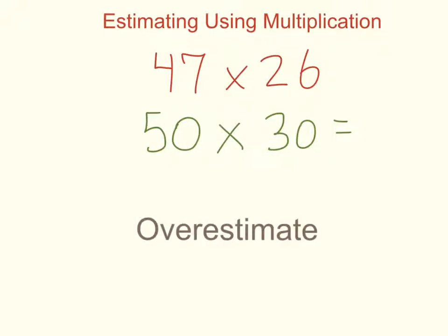The reason it's an overestimate is because I rounded the number 47 up to 50, and I rounded the number 26 up to 30. So by rounding both numbers up, I know that my estimate is going to be over the actual answer. My estimated answer is 1500.